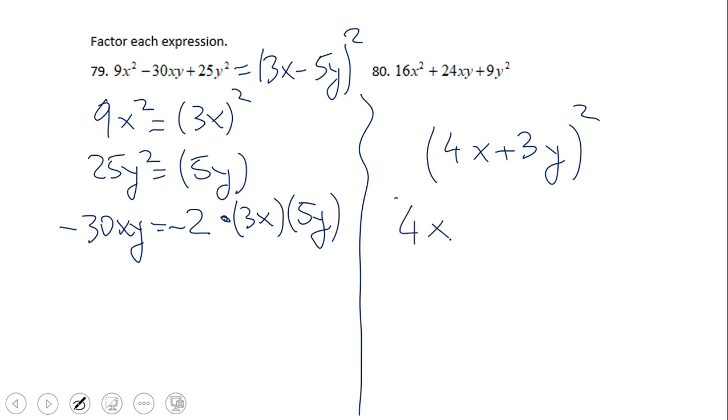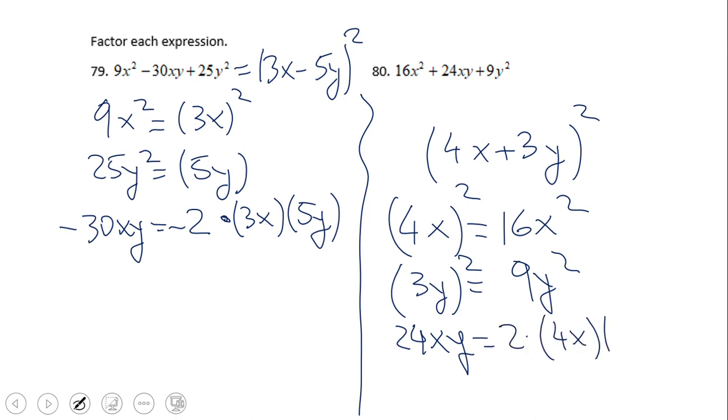Let me write it: 4x². The quantity (4x)² is 16x². (3y)² is the quantity (3y)² is 9y². And 24xy is the product of 2, 4x, and 3y.